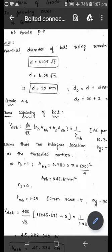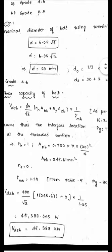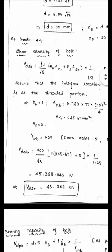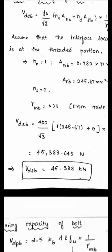A_nb = 0.78 × (π × 20² / 4). Since n_s = 0, that term vanishes. Substituting all values with γ_mp = 1.25, we get V_DSP = 4538.045 N. Converting to kilonewtons by dividing by 1000, V_DSP = 45.38 kN. This is the shear capacity of the bolt.